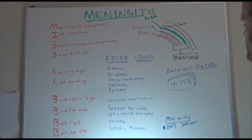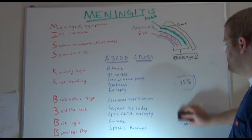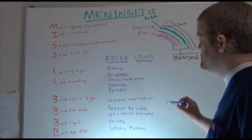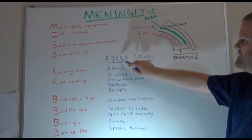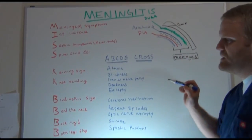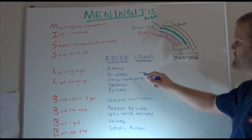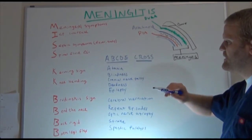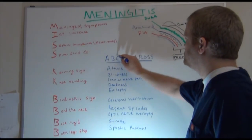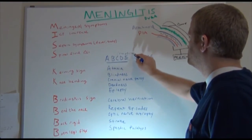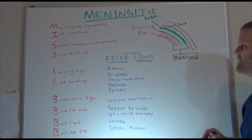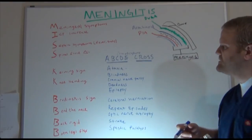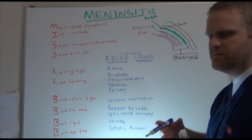Let's talk about some mnemonics to help remember things about meningitis. The first mnemonic covers complications associated with meningitis: ABCDE. A is for Ataxia, B is for Blindness, C is for Cranial Nerve Palsy, D is for Deafness, E is for Epilepsy. Ataxia means a lack of coordinated movement, so the patient's not going to be as coordinated as they would normally be.